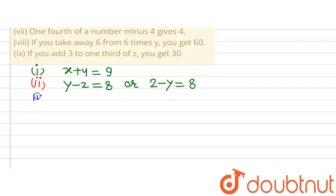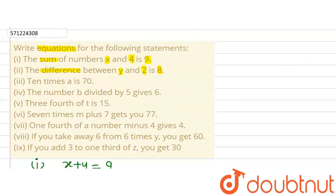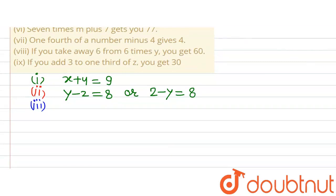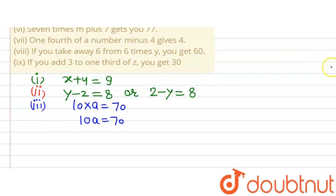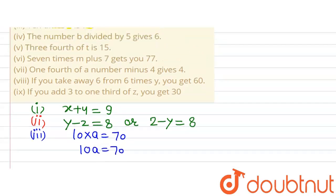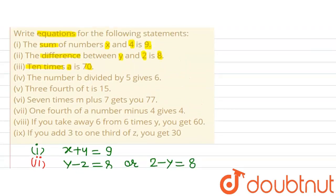The third part says 10 times a is 70. Ten times a means 10 multiplied by a, which gives 10a = 70. This is the equation representing the third part of the question.